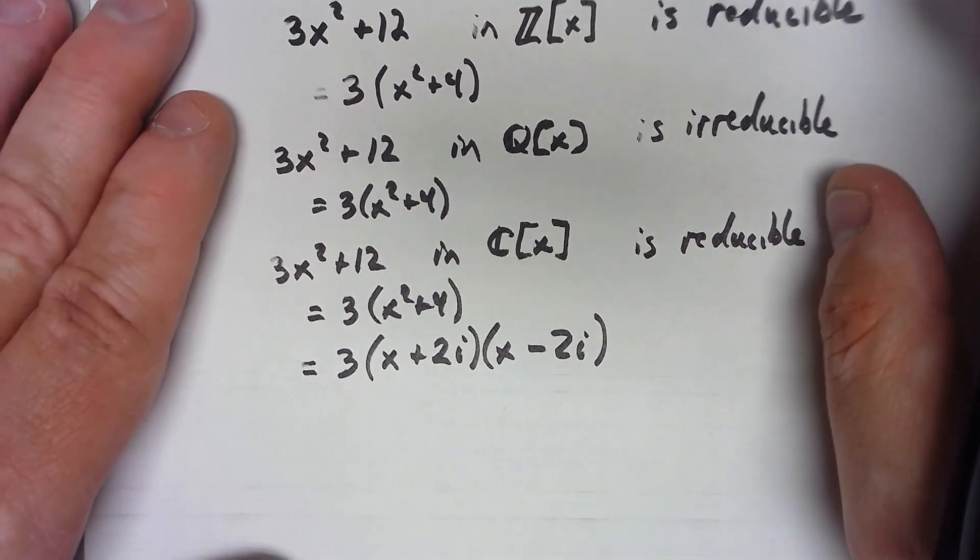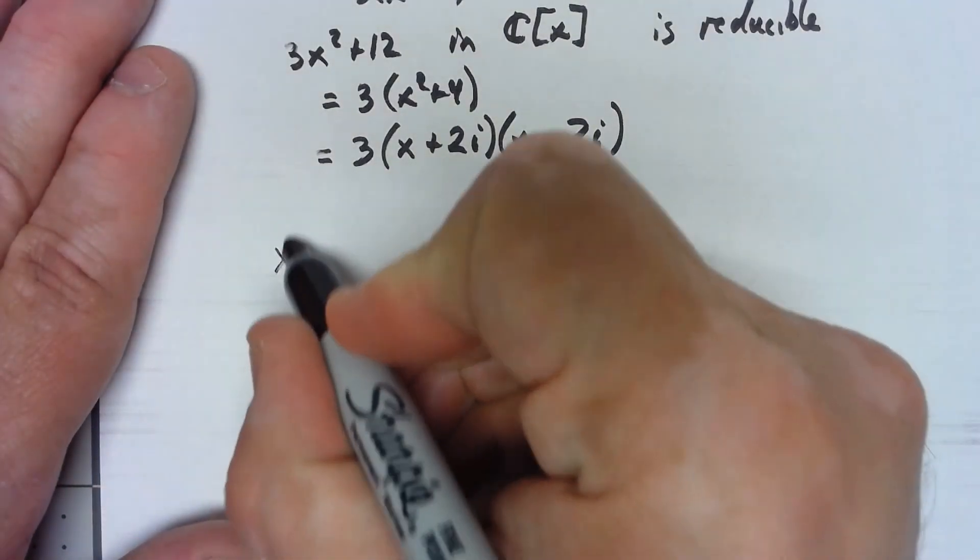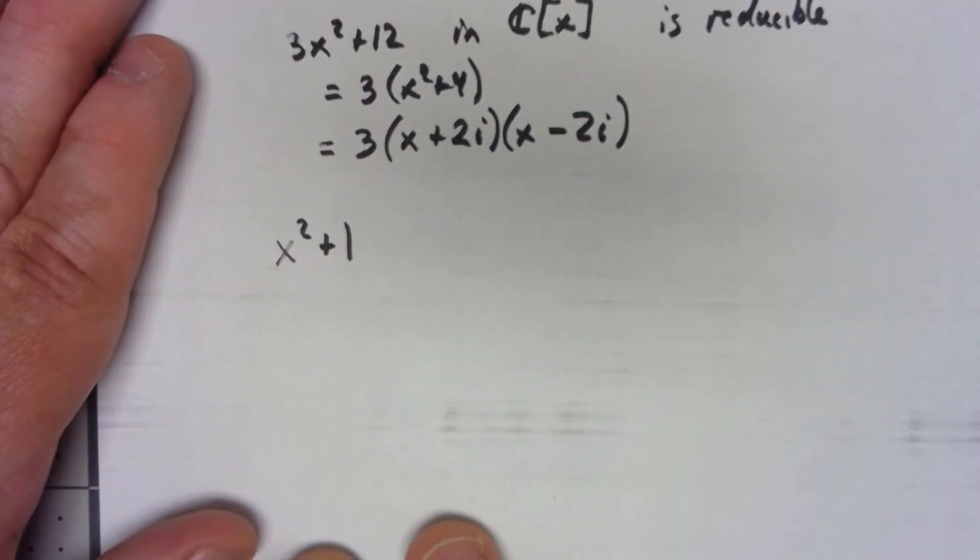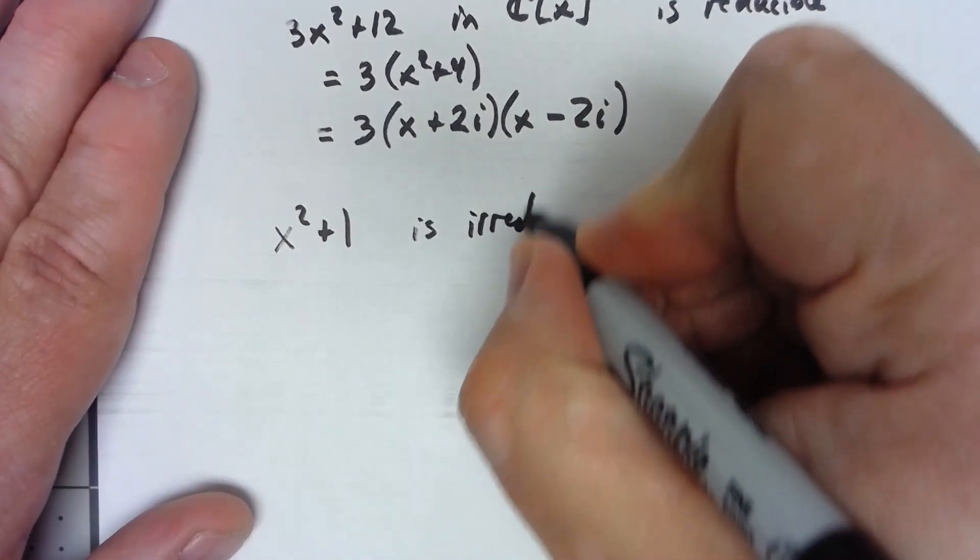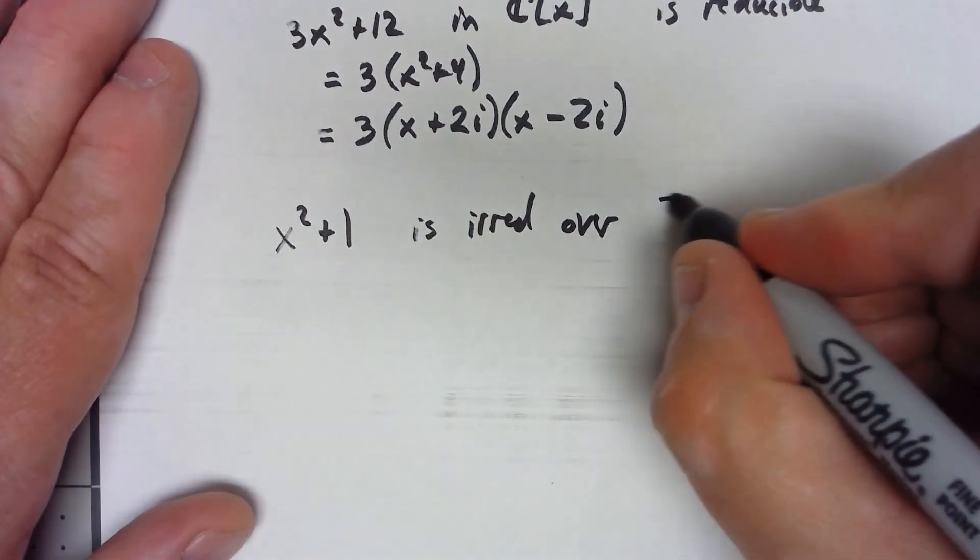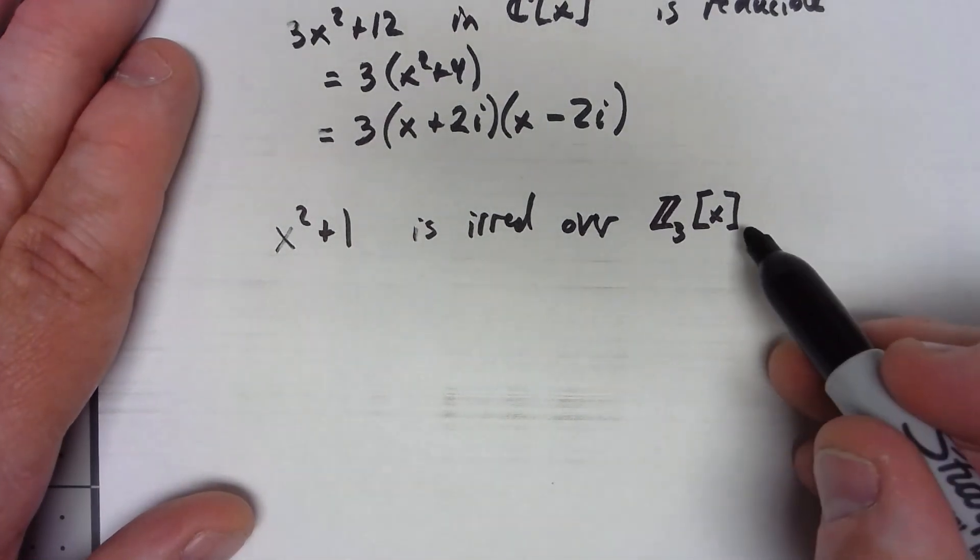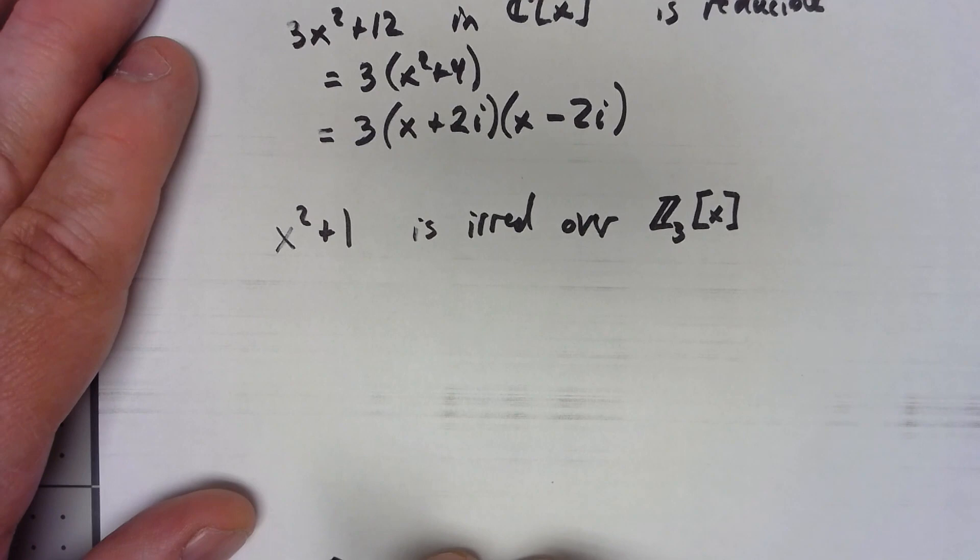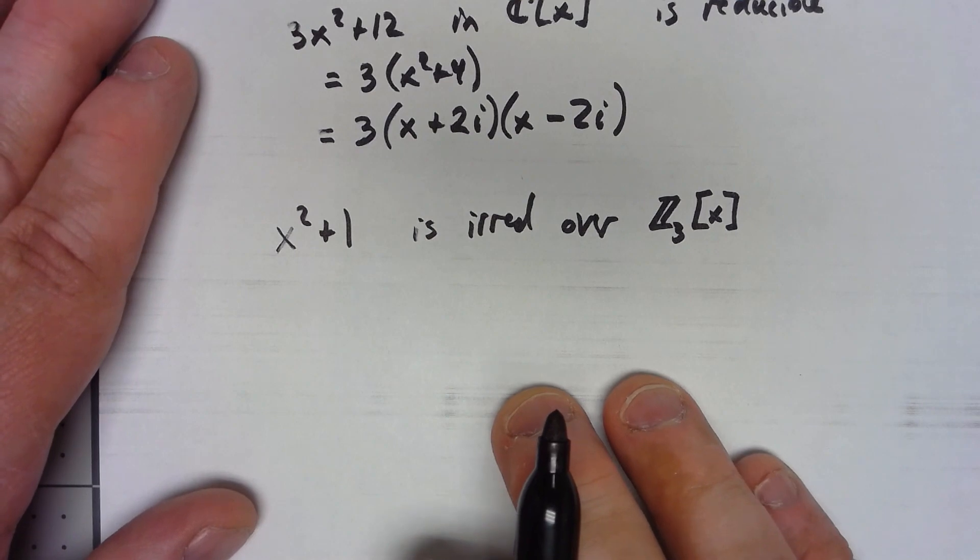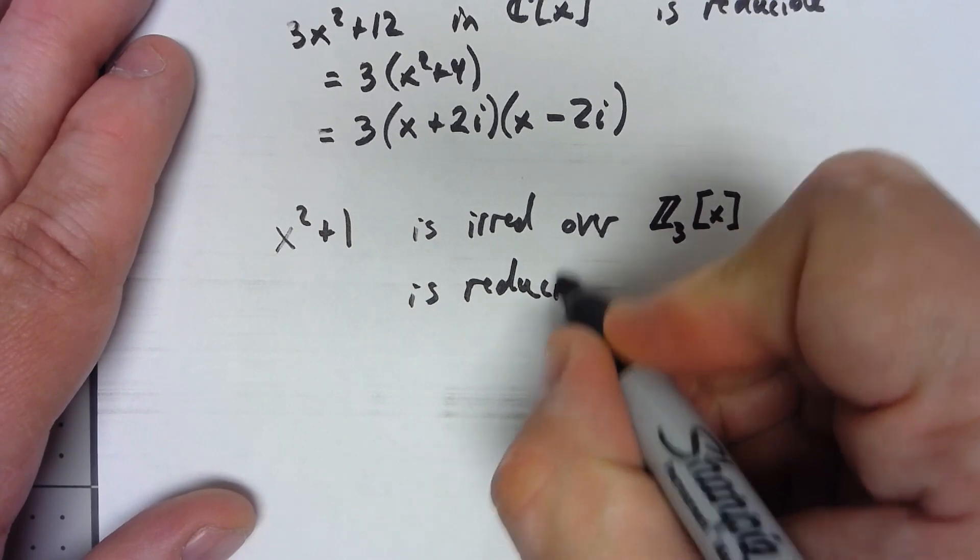Let's look at another example here. Let's say I've got x squared plus 1. This is irreducible over Z_3[x]. Now showing that is kind of hard to do. In fact in general showing something is irreducible is kind of challenging but we'll find out a better way to do this here in a minute. But it's reducible over Z_5[x].